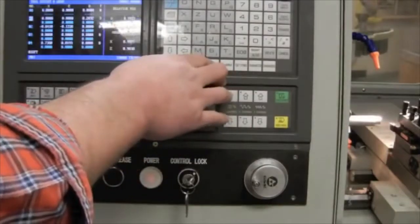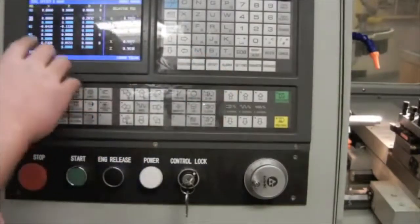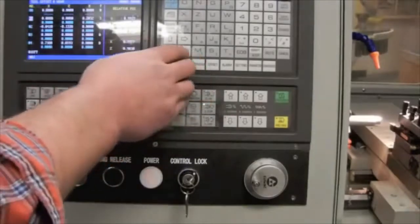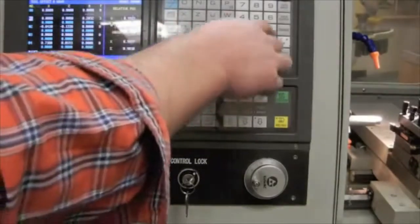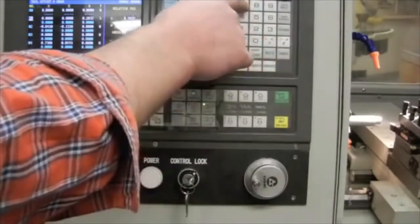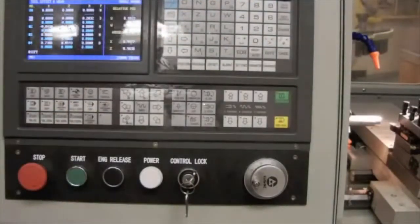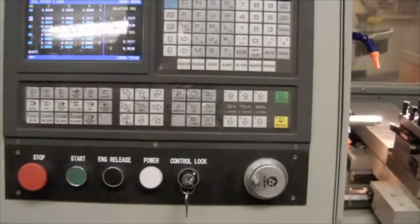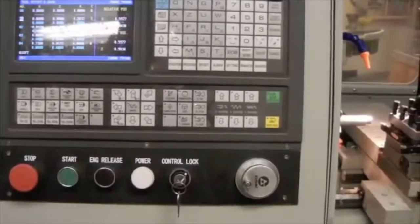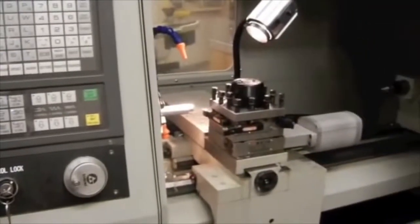I press offset again to tool offset and wear. Tool one selected. I enter X.9977, data input. So tool one is now totally taken care of. I'm now going to set up my second cutting tool, and this process ends up being tool number four.